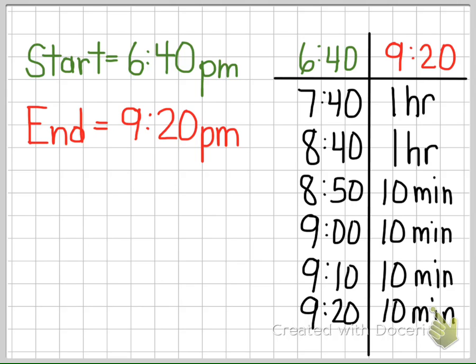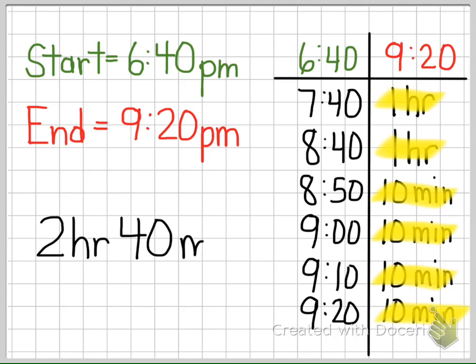Now all we have to do is find the total number of hours and minutes by adding like terms. One hour plus one hour equals two hours. And four tens is 40, so our elapsed time, or time that passed, is 2 hours and 40 minutes.